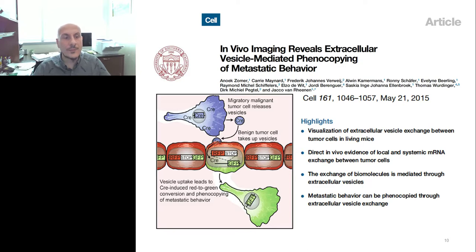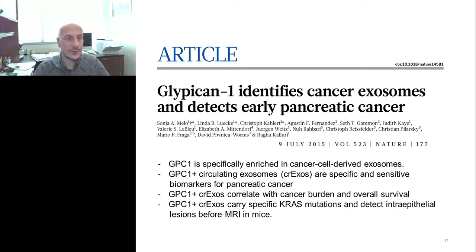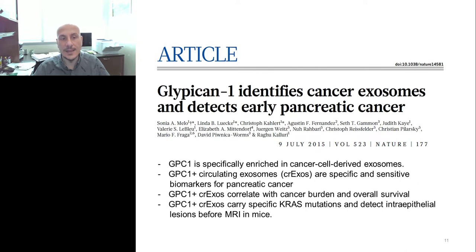Raghu Kalluri's group provided the first evidence that surface markers of vesicles, such as glipican-1, can be used to identify cancer-derived exosomes — particularly valuable for early diagnosis of pancreatic cancer. This provided significant hope for patients, since early diagnosis represents probably the most powerful tool we have for treating this very deadly cancer. Having an early marker detectable in circulating exosomes is a very powerful tool against this disease.